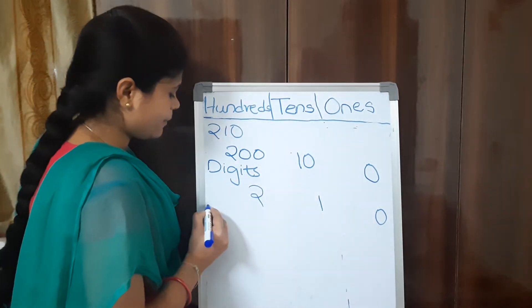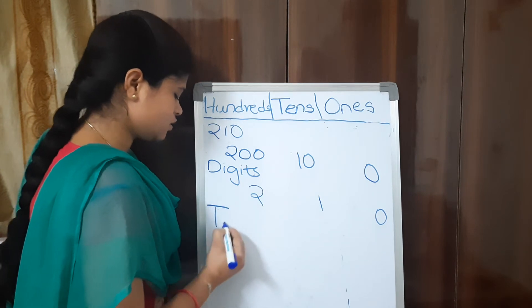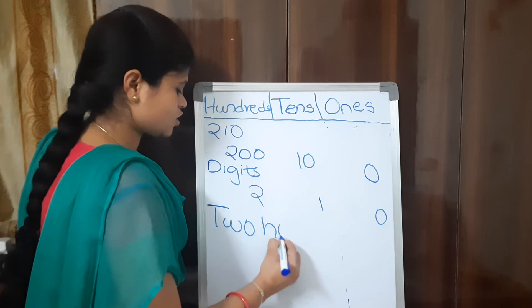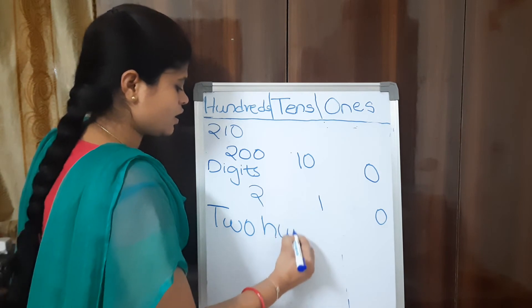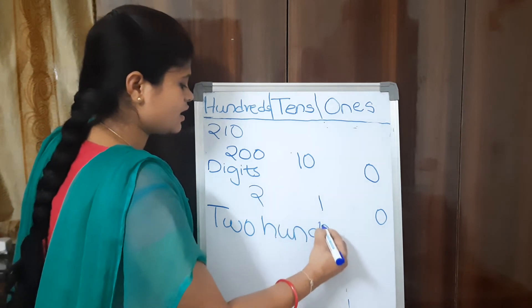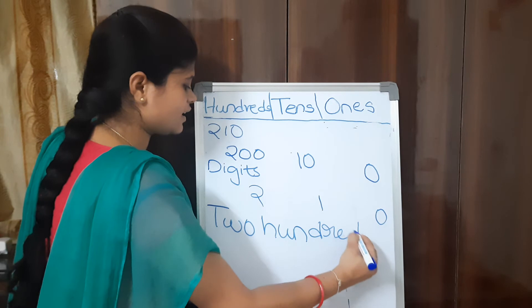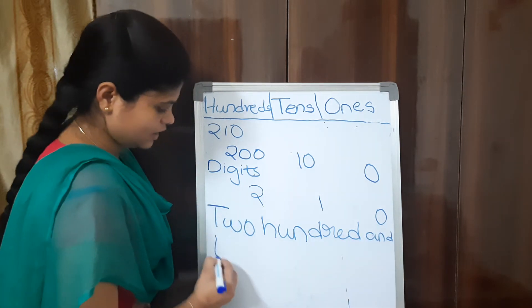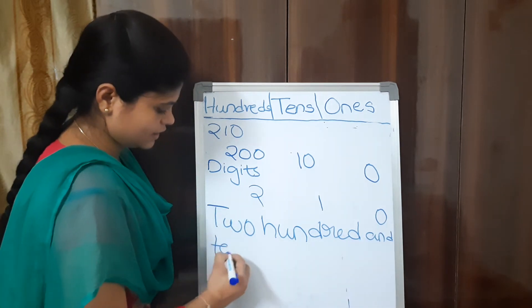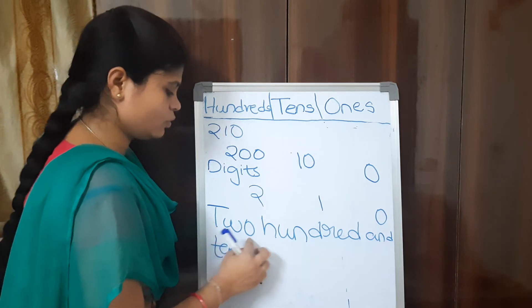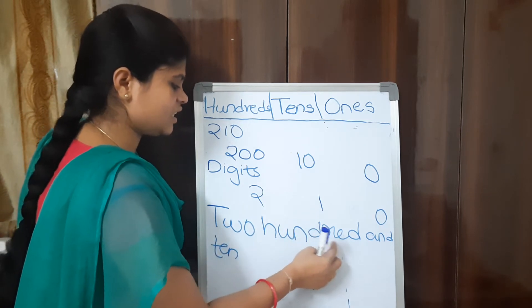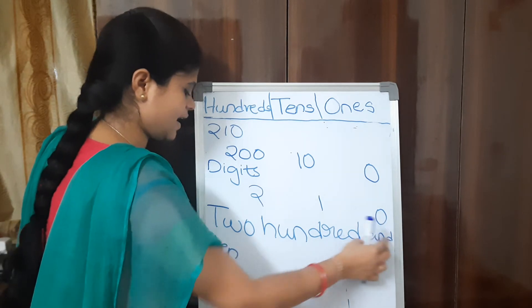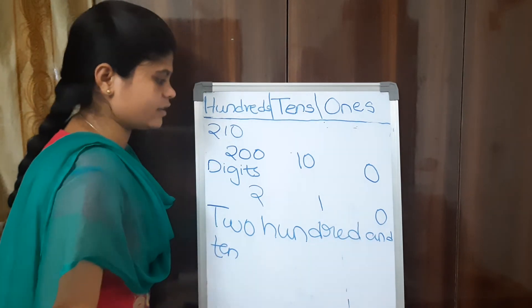What is the number name of 210? Two hundred and ten. This is how we represent 210 in place values, in digits, and as a number name.